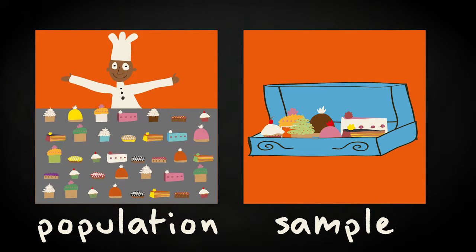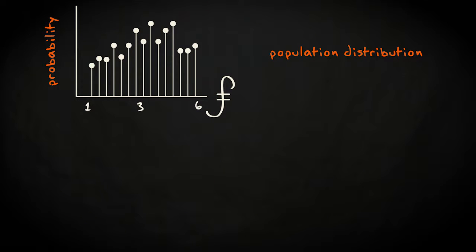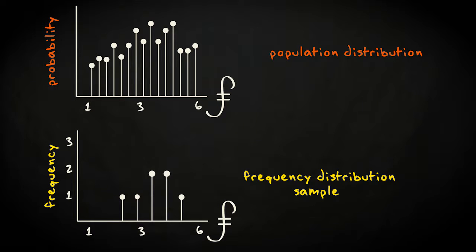Now each type of pastry is priced differently, and it is the price that we will consider as the variable of interest here. In this graph, the probability distribution for the prices of all available pastries in the shop is given. It is the population distribution.